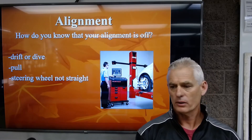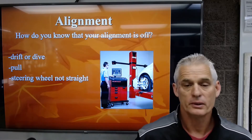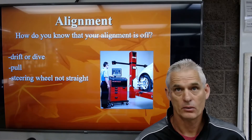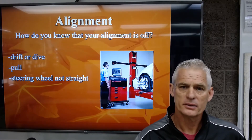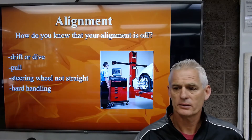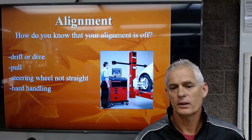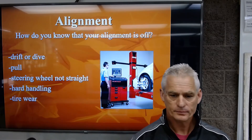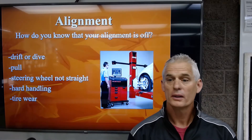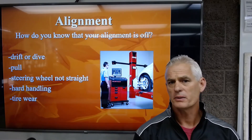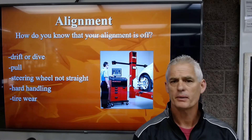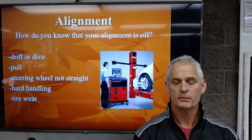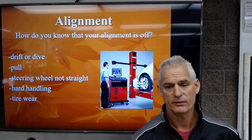We want the steering wheel to be straight. If the steering wheel is not straight, we know we need an alignment. It may not wear the tires, but a crooked steering wheel is a misalignment issue. Hard handling — if you're fighting the steering — can also indicate misalignment. Tire wear is probably the most common sign of misalignment. Front-wheel-drive cars have accelerated tire wear on the front, so we must rotate those tires frequently.